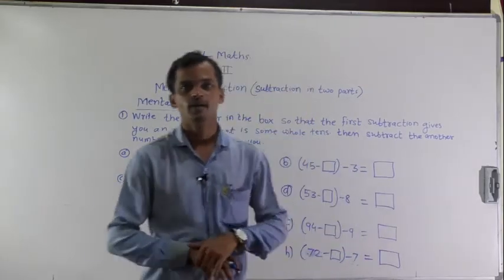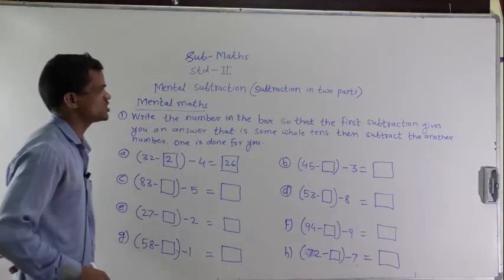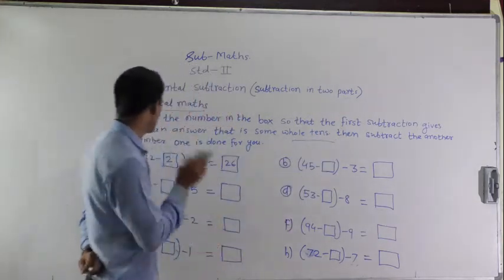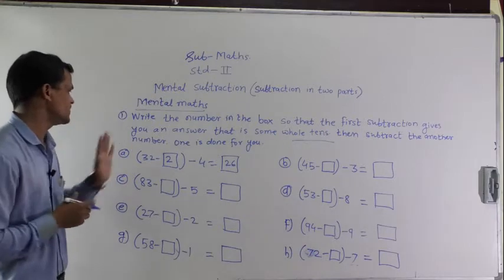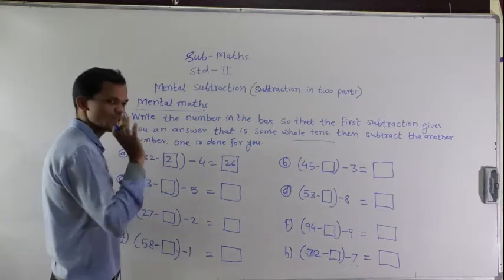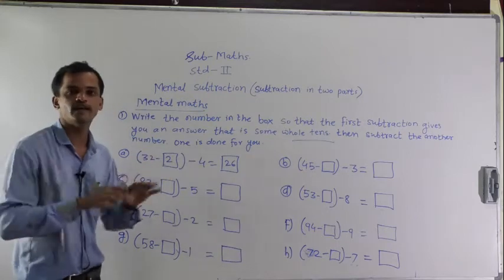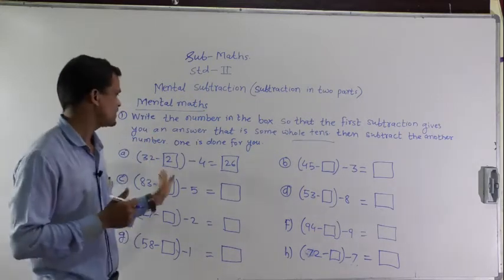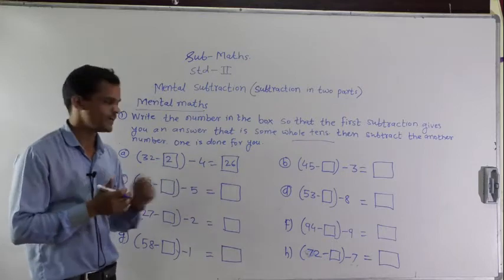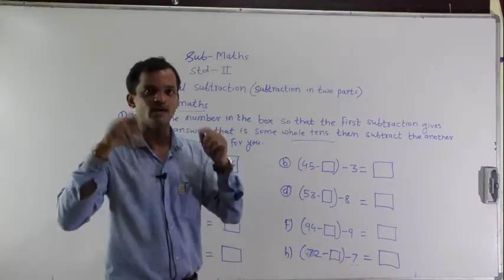Like this we will solve mental math, page number 58. See the instruction: write the number in the box so that the first subtraction gives you an answer that is a whole ten, then subtract the other number. One is done for you. Here, 32 minus 2 — if we subtract 2 from 32 we will get 30, which is the whole ten, and then subtract 4 from 30. So 30 minus 4 equals 26. Here you have to do the subtraction mentally, just think and give the answer.